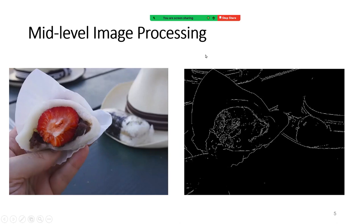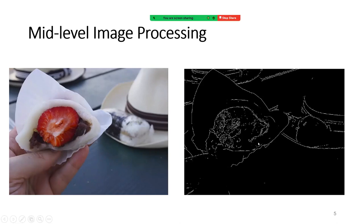In mid-level image processing, you provide the image as input and the output becomes the edge of the image, the boundary of the image, or the separation of the foreground from the background. This is called mid-level image processing.